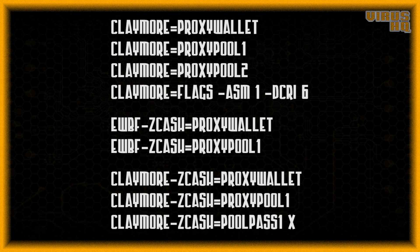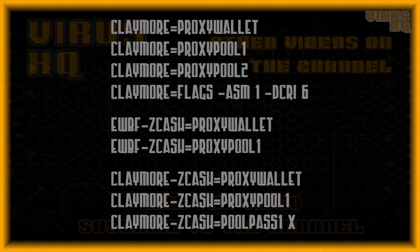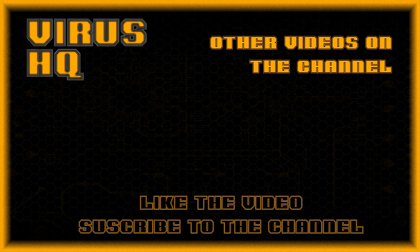The last part covers individual miner proxy values and pools — use this if you're running multiple miners. You define values like claymo equals proxy wallet or claymo equals proxy pool, setting the proxy wallet specifically for Claymore. The same applies to EWBF Zcash and others. So if you have multiple wallet IDs and want to mine multiple coins, this option must be used. That's it for this video — thank you for watching, like or dislike, subscribe to the channel, share it, and check out my other videos.